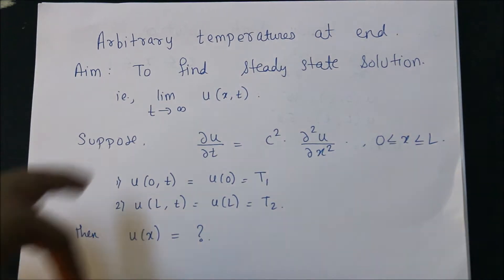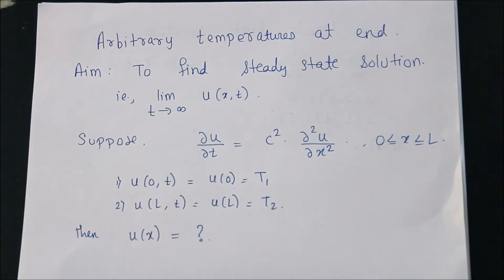If you recall our solutions in type one, type two, or type three, the solution involves e raised to minus t squared, something into t. So all those solutions depend on time.